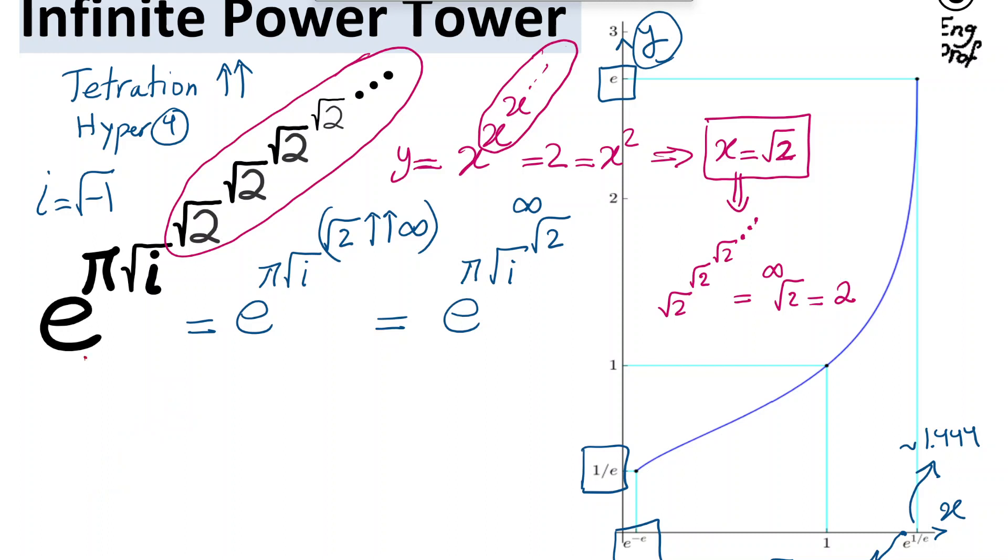Therefore, I am able to say that at least this is converging, and I can rewrite the whole thing as e to the pi square root of i and then to the power of 2, which is equal to, obviously, this becomes i, so e to the pi i, and this is well-known, of course. It's a phasor, so it easily becomes just negative 1.